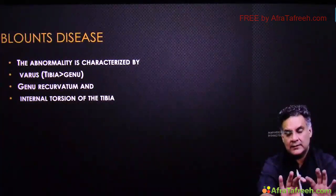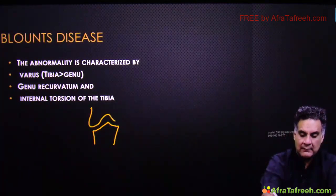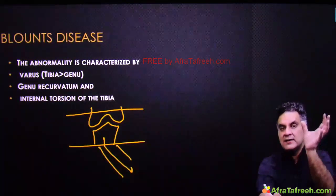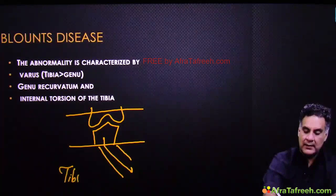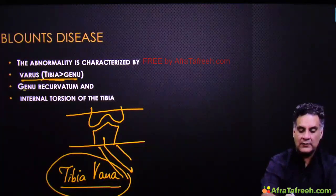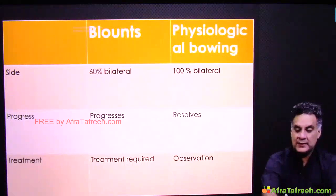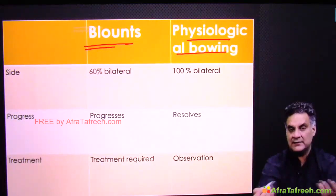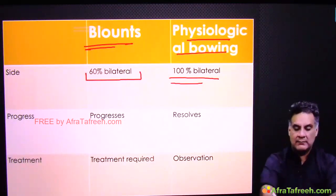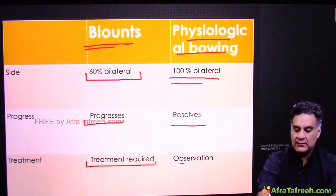When the femur and tibia move towards the midline, it's genu varum. When the upper end of tibia maintains its normal relationship with the lower femur but then abruptly at the metaphyseo-diaphyseal junction the tibia goes in, it's called tibia vara. Tibia vera is part of genu varum along with knee hyperextension and internal rotation of the leg — this is Blount's disease. Blount's is 60% bilateral; physiological is 100% bilateral. Blount's worsens with age; physiological improves with age. Blount's requires treatment; physiological resolves on its own.